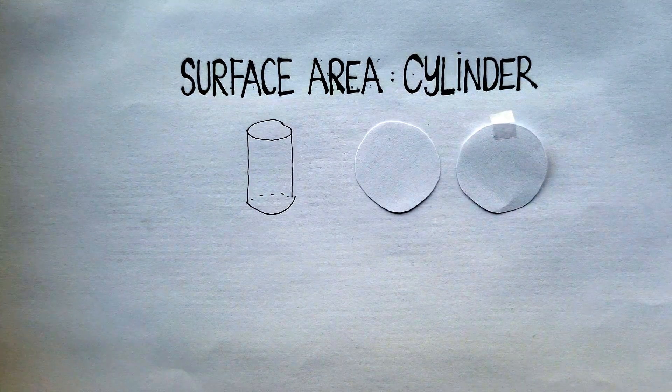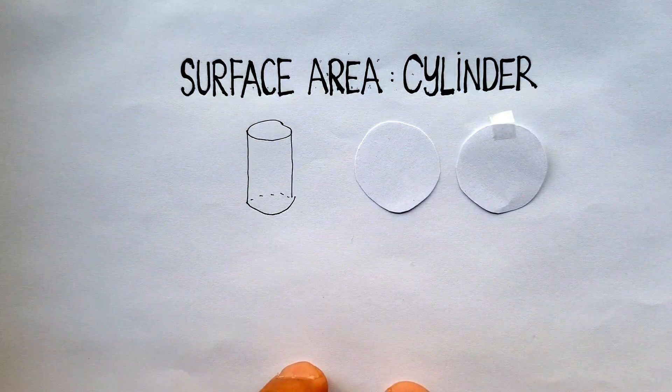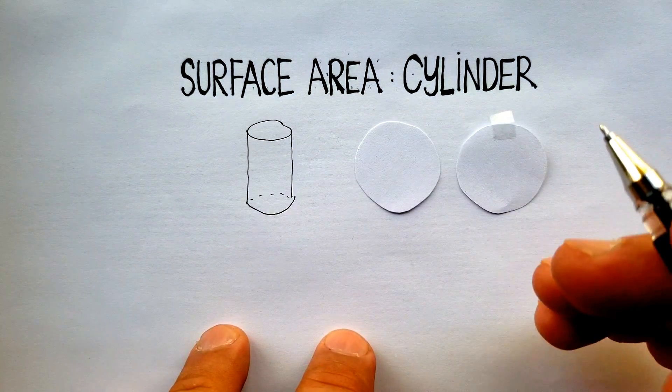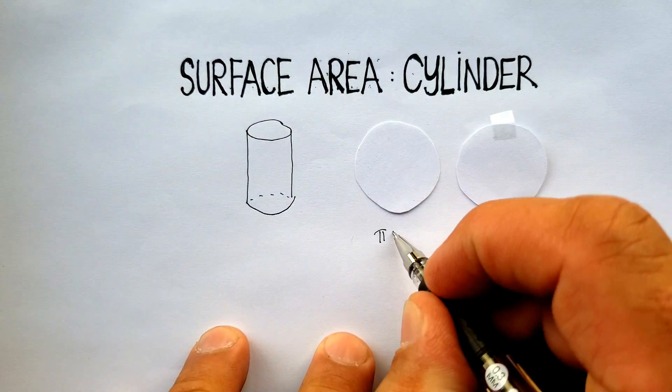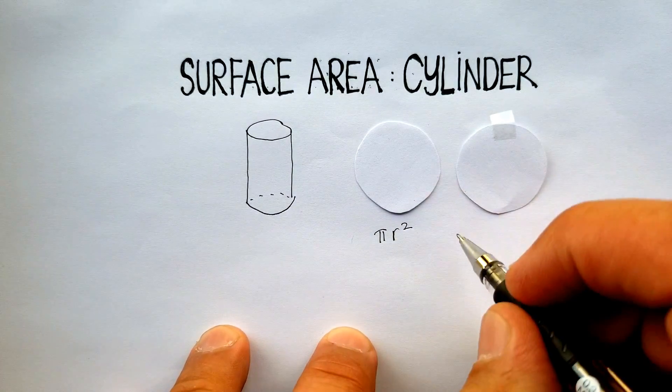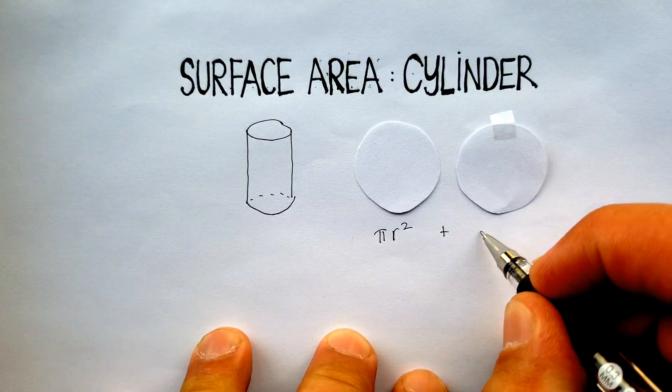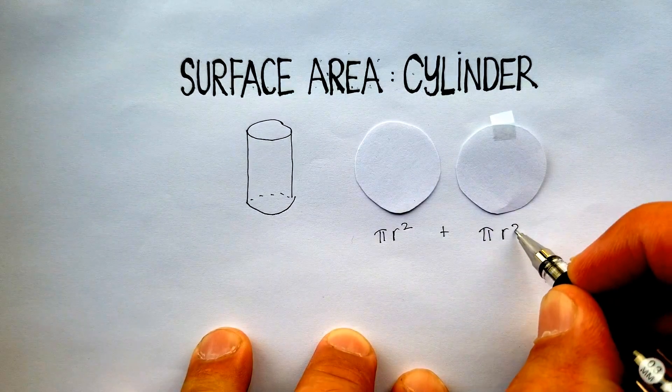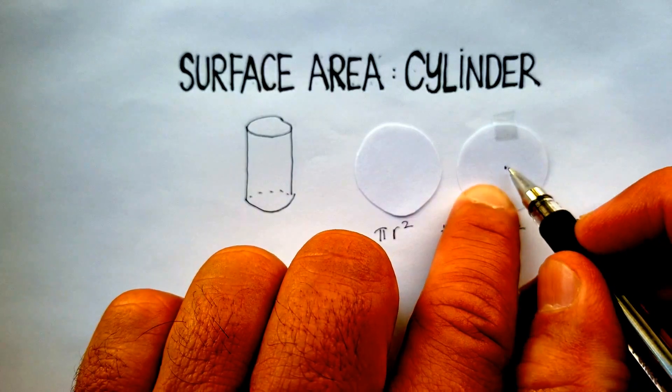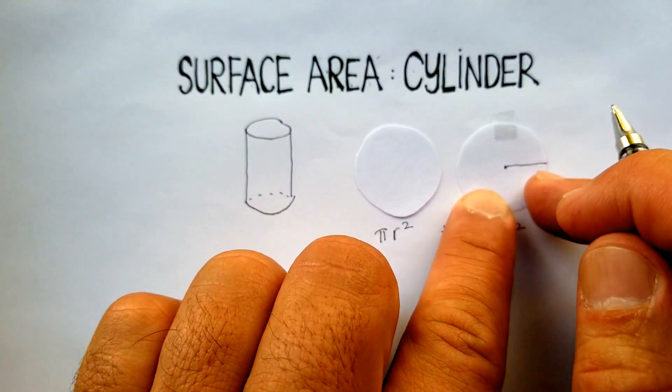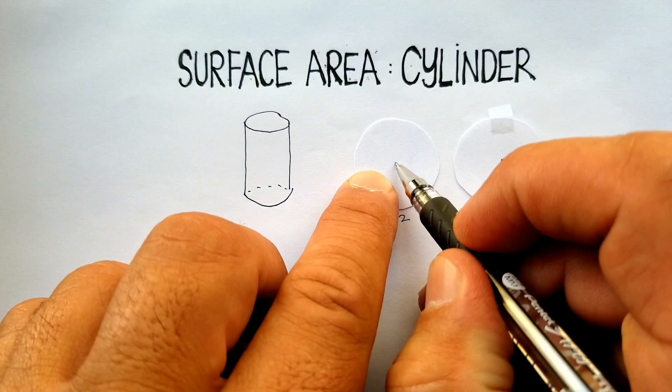How do you find the area of a circle? Well, you should know that the area of a circle is pi times radius squared. And notice that I have two of them. Remember that the radius is the distance from the center of the circle to the outside edge. So I've got two of those as well.